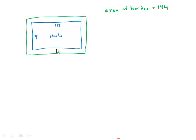We'll call the width X. Dividing the border into pieces, we have a rectangle that is 10X on one side, and another rectangle that is 10X on the opposite side.